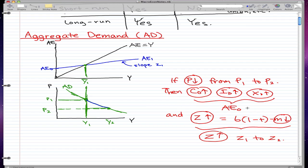Then the consumption, investment, and exports rose. That means the autonomous expenditure rose. So this rose from AE1, it goes from AE1 to AE2.